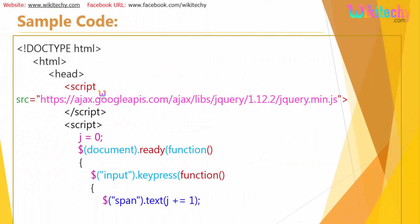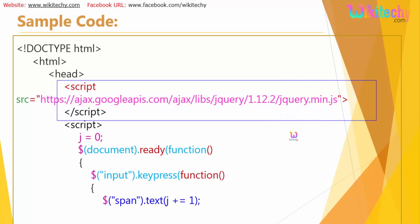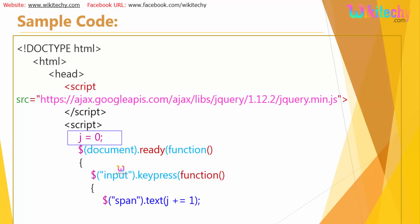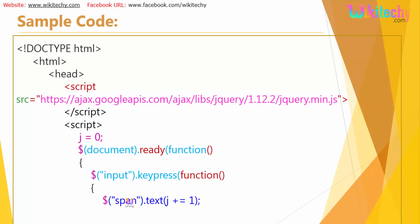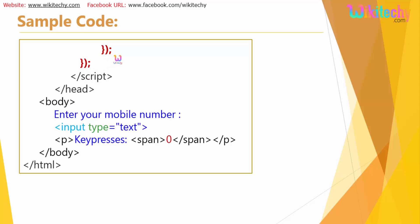Let me show you the sample code. You'll have an HTML tag with a head tag. In the head tag you'll have the script — this is the jQuery reference you have to include in all jQuery programs. The value of j is 0. Document ready function is the first statement to monitor an HTML page. Input is the selector, and once a keypress occurs on the input, it does some processing on the span tag. The script tag is closed, then head, and you have the body with an input tag and a span tag.